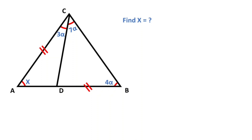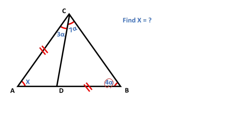Hello everyone. In this video we have one triangle and these two sides are equal. Here is given 3 alpha, here is 7 alpha, here is given 4 alpha, and then x is x.